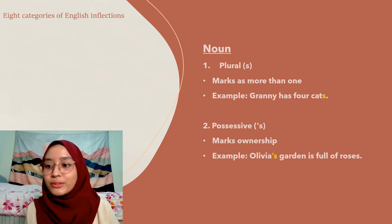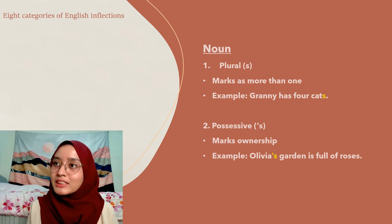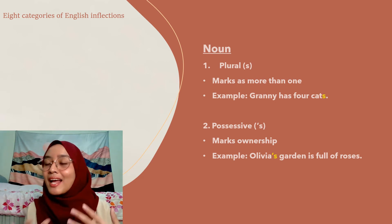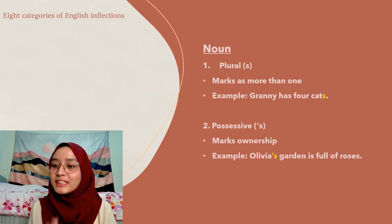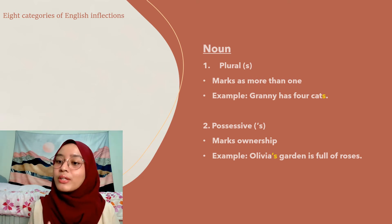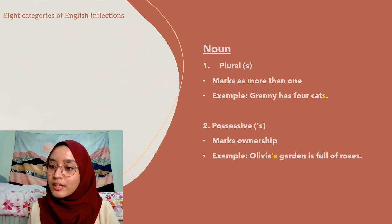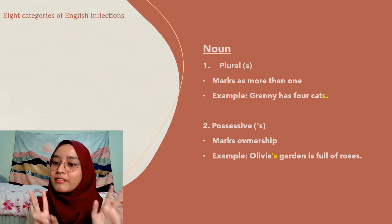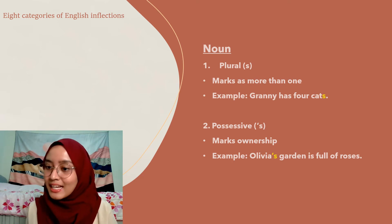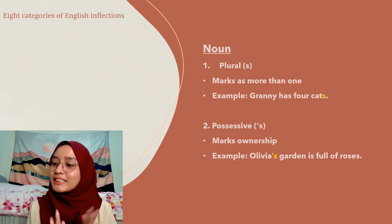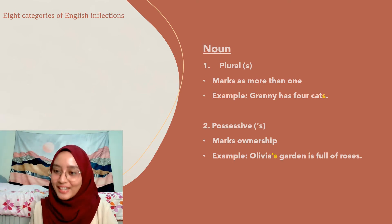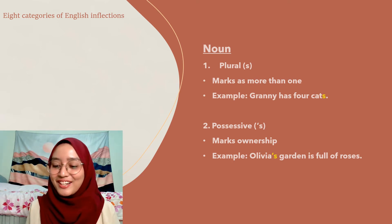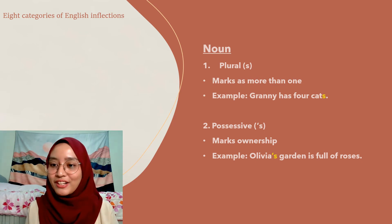The possessive inflection marks ownership using the apostrophe -s. For example: Olivia's garden, John's bedroom, Emily's book. Just remember that under nouns, we only have two suffixes: the suffix -s and the suffix apostrophe -s.